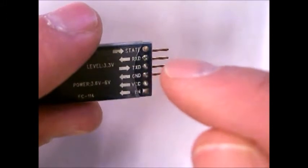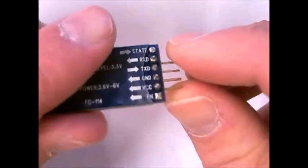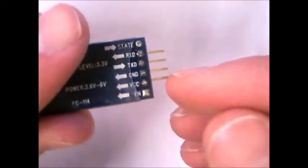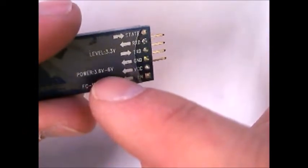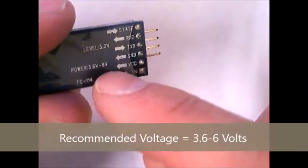These TX and RX pins. Let's go over the first ones first. You've got the voltage coming in. This one was lucky and it gave you the voltage range, 3.6 to 6 volts.